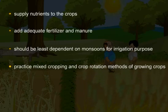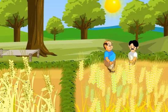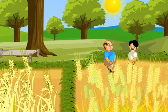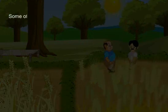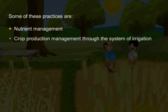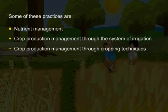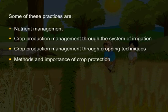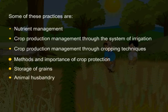Through this chapter, we will get to know various other practices that help in causing improvement in food resources. Some of these practices are: nutrient management, crop production management through irrigation, crop production management through cropping techniques, methods and importance of crop protection, storage of grains, and animal husbandry.